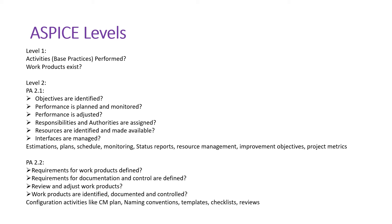PA 2.2 is also talking about the requirements for work products, which means all configuration management activities come into the picture. You should have a unique identification number and naming convention for the project. You also need a configuration management plan, configuration status reporting, templates to be followed, checklists, and reviews — including how frequently reviews should be done, what the review outcomes are, and how to adjust the work product to fulfill the requirement.